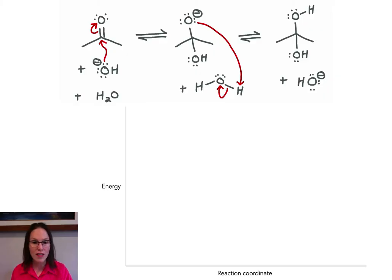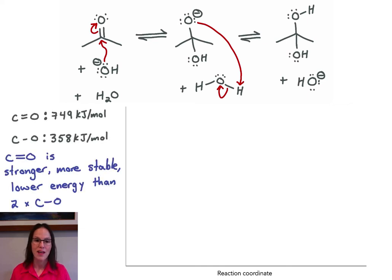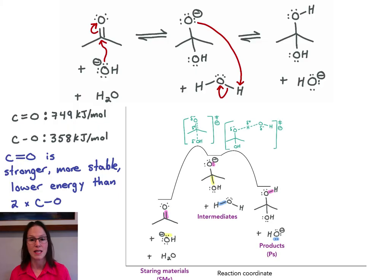Often, not all the information will be available to you, so in those cases, make your best guess. In this example, the carbonyl bond in the starting ketone is stronger, more stable, and therefore lower energy than the two carbon-oxygen sigma bonds in the products.